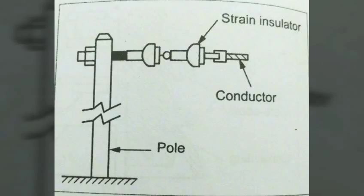When tension in the line is exceedingly high, as at long river spans, two or more strings are used in parallel. The disks of a strain insulator are the same as a suspension insulator, except that they are in a vertical plane.